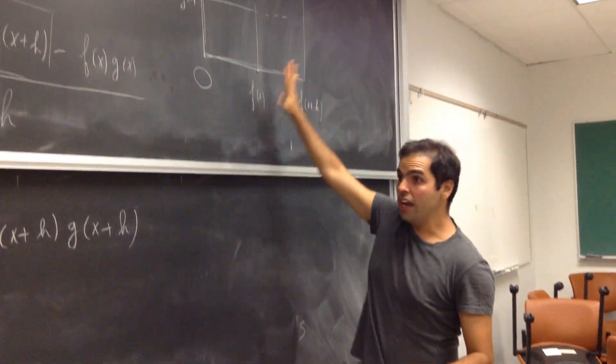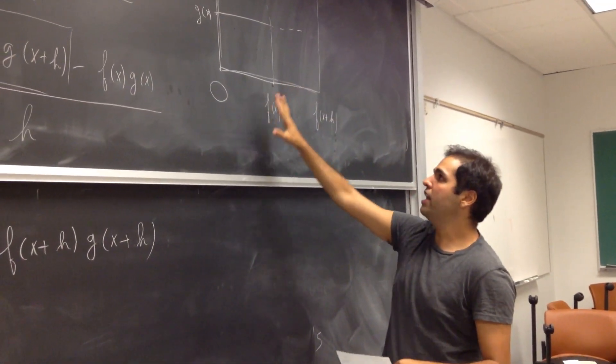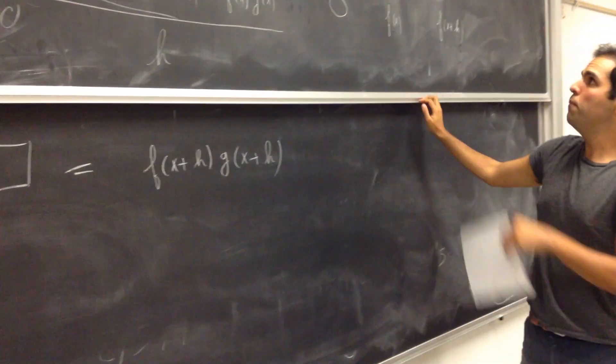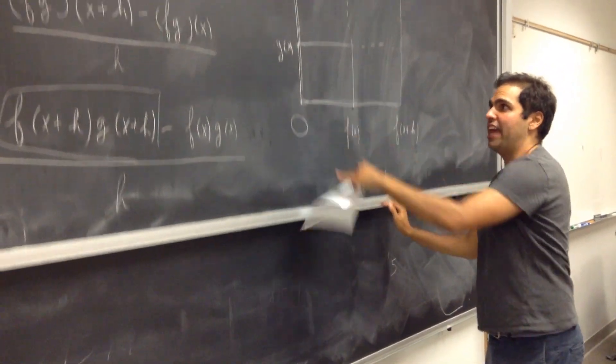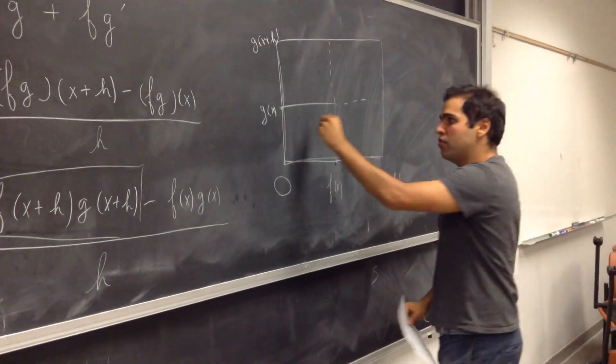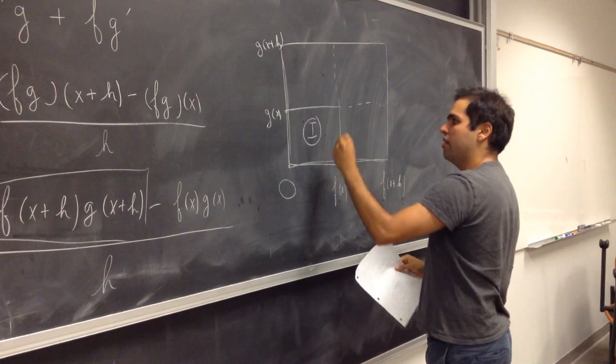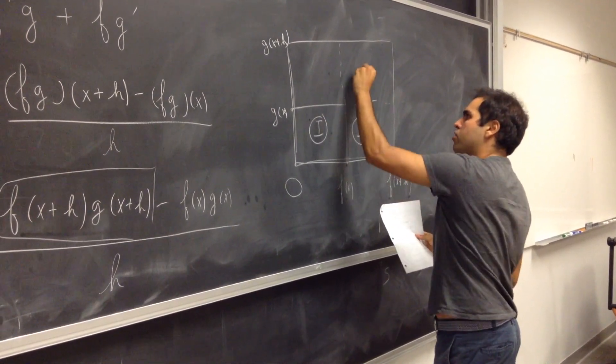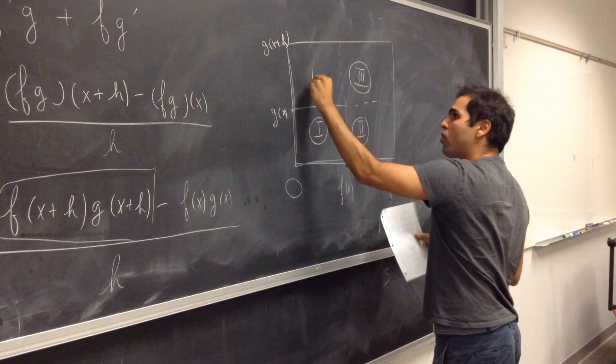Now, on the one hand, the area of the big rectangle is this formula, but notice the big rectangle is made out of smaller rectangles. Let's call them one, two, three, and four.